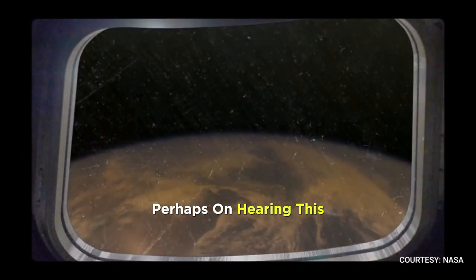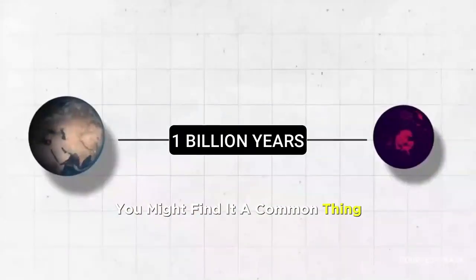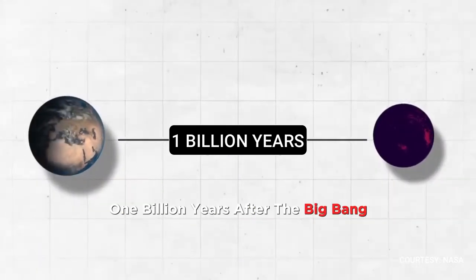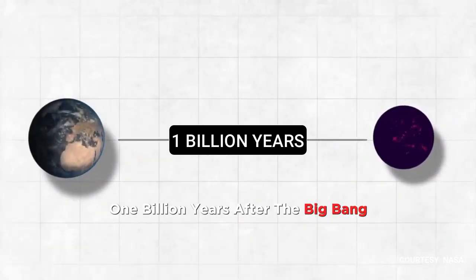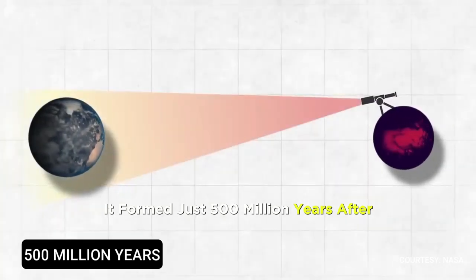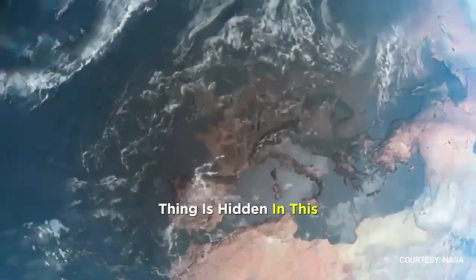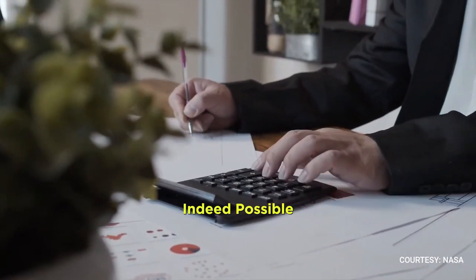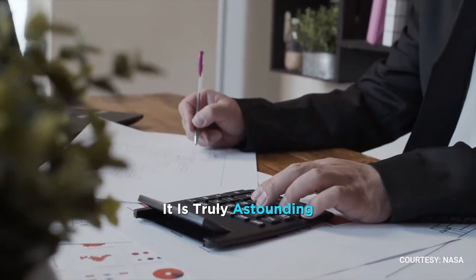Perhaps, on hearing this, you might find it a common thing, but what is so special about it? Scientists claimed it was formed 1 billion years after the Big Bang, and in reality, it formed just 500 million years after. What astonishing thing is hidden in this? Estimation errors are indeed possible, but let me tell you, it is truly astounding.